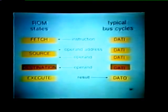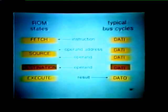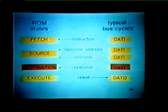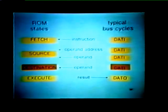Here are some typical bus cycles used with each of the four ROM states. The fetch state always requires a data I bus cycle to retrieve the instruction from memory. The source and destination states require one or more data I cycles to retrieve the operand if it is stored in memory or an IO device register. The execute state uses a data O cycle if the result is to be stored externally; no bus cycle is needed if the result is stored internally in the GPRs.